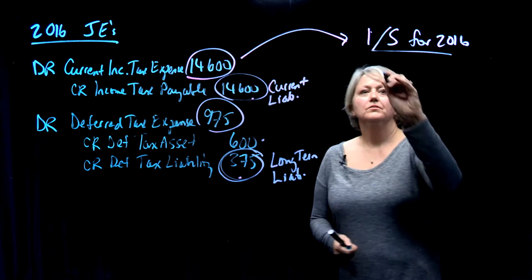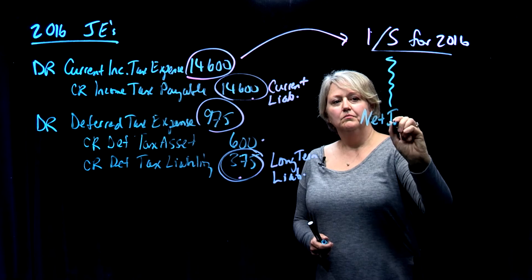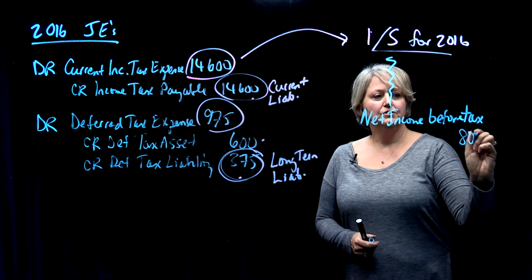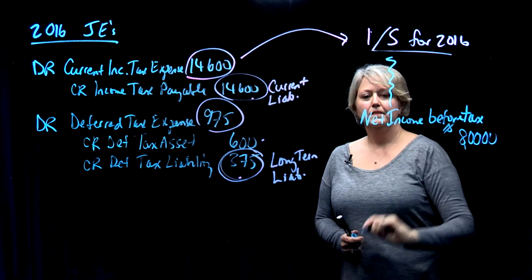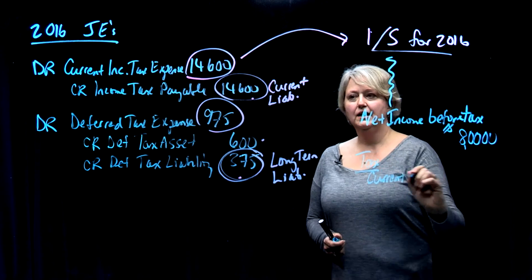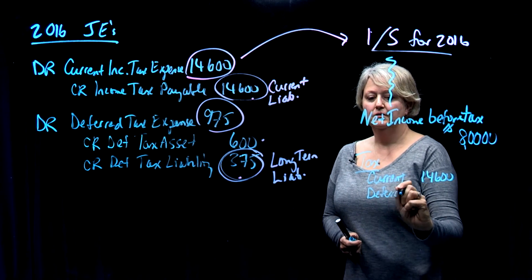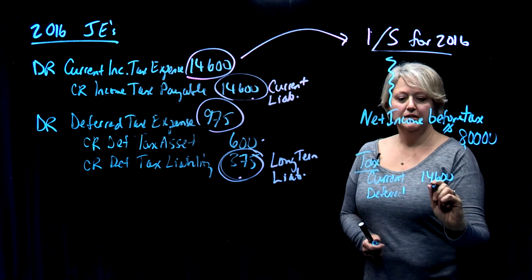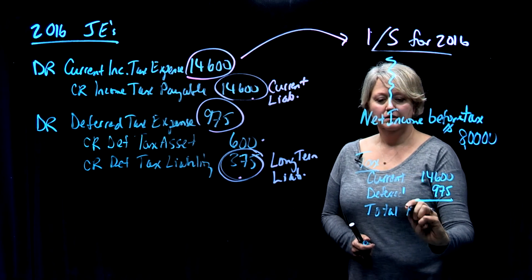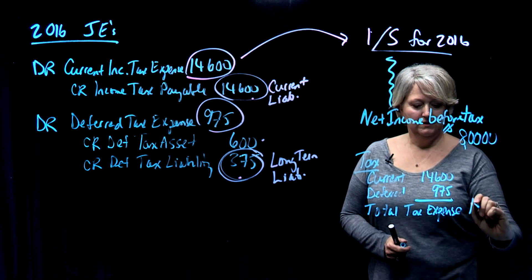On our income statement, we've got your normal income statement—sales, less expenses and so on. We'll come down to net income before tax of $80,000. The tax entry is going to be made up of two items: the current tax from this journal entry of $14,600 and the deferred tax expense of $975. So the total tax expense is $15,575.